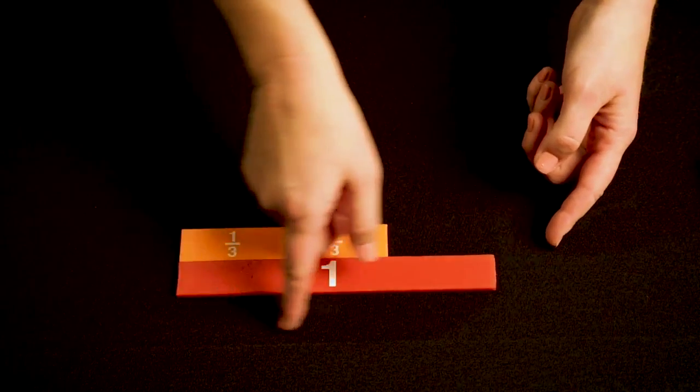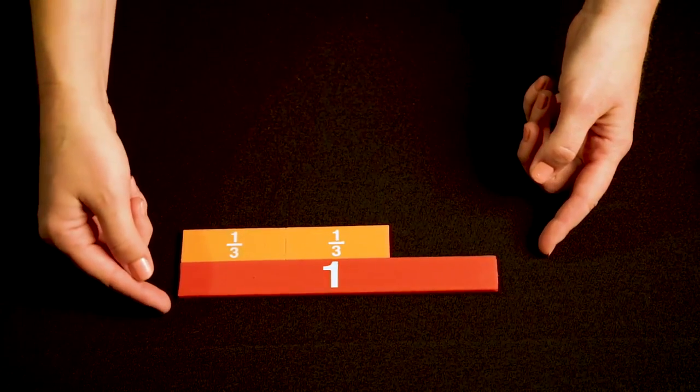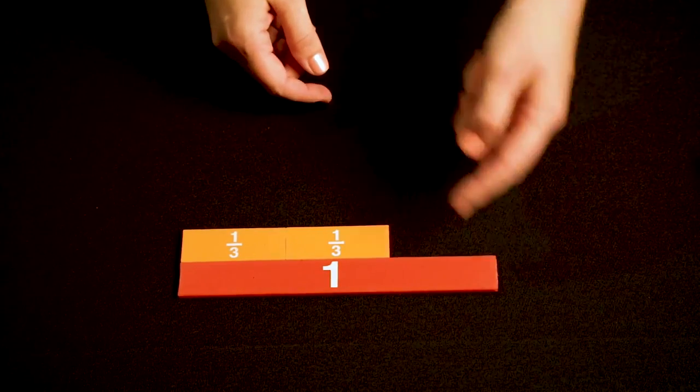Imagine the whole as running along a number line with zero on this side of the whole and one over here.